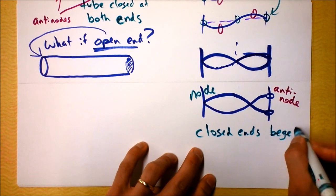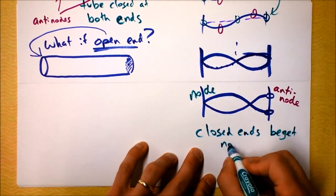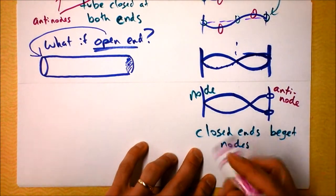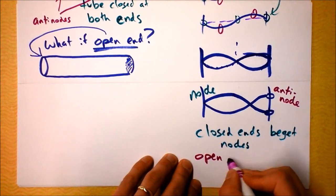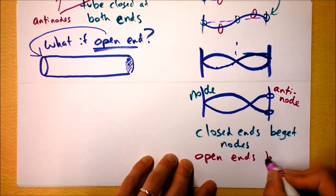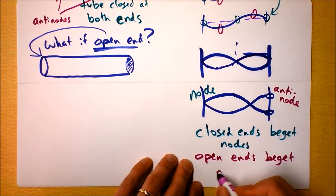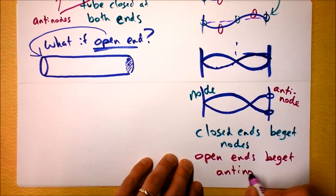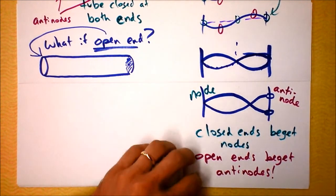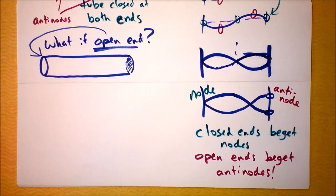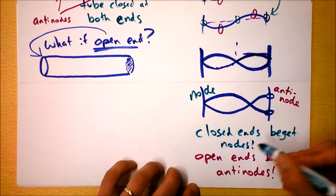I'm going to say closed ends beget nodes, open ends beget anti-nodes. Put some exclamation points there. Get some more exclamation points going here.